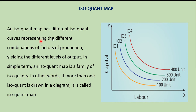An isoquant map has different isoquant curves representing different combinations of factors of production. Because of these different combinations, you get different levels of output: 100, 200, 300, and 400. In simple terms, an isoquant map is a family of isoquants. In other words, if more than one isoquant is drawn in a diagram, it is called an isoquant map.